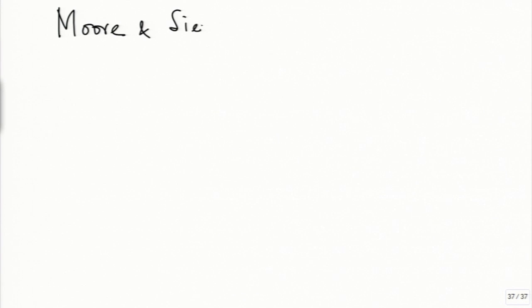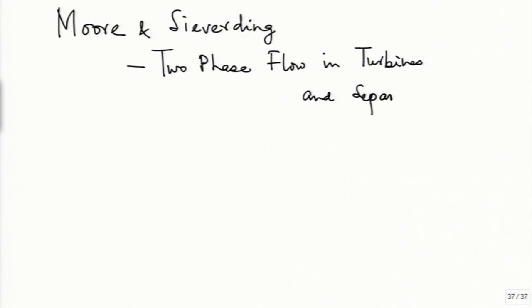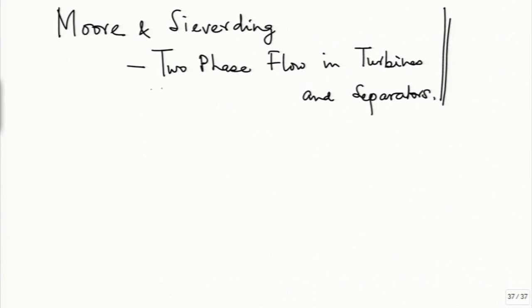If you want more technical details on this, I refer you to a book by Moore and C.A. — I think the title is 'Two-Phase Flow in Turbines and Separators.' This is recommended reading particularly for the supersaturation which occurs in steam nozzles. Although they talk of two-phase flow, it is essentially the two-phase flow of steam-water that they are talking about.